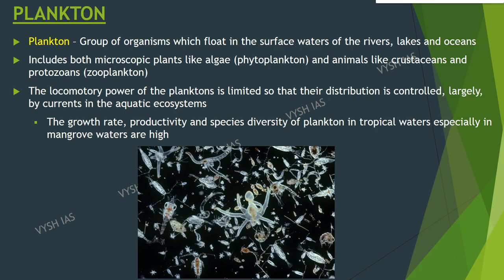Plankton: The term plankton refers to a group of organisms which float in the surface waters of rivers, lakes and oceans. They include both microscopic plants and animals — that is phytoplankton and zooplankton. Phytoplankton include algae and zooplankton include crustaceans and protozoans. The locomotory power of plankton is limited so their distribution is controlled largely by currents in the aquatic ecosystems.